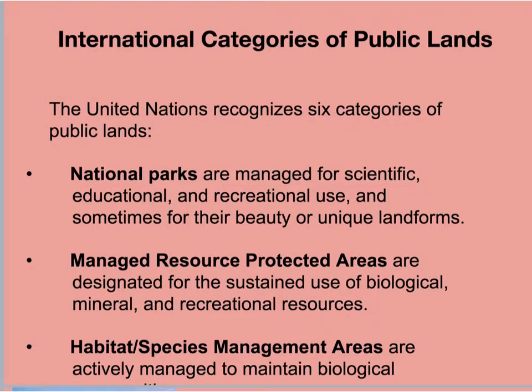The 2003 United Nations list of protected land areas classified protected public lands into six categories according to how they are used: national parks, managed resource protected areas, habitat and species management areas, strict nature reserves and wilderness areas, protected landscapes and seascapes, and national monuments.